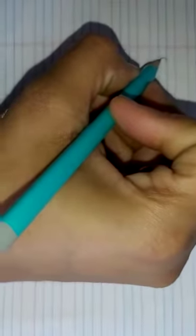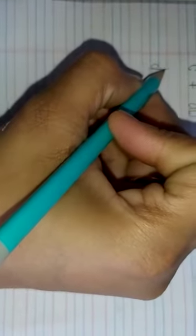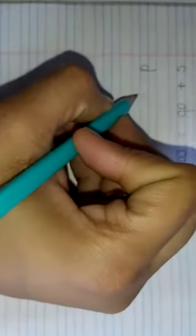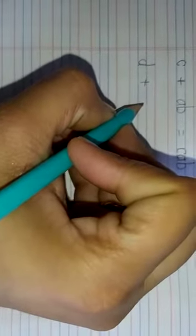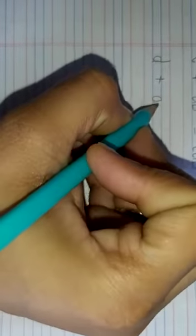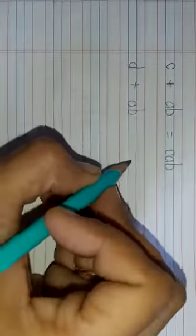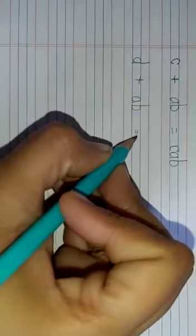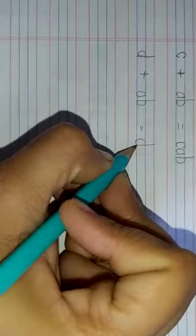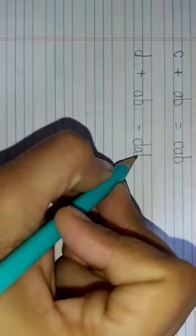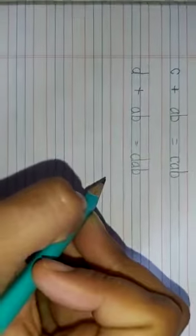Now next, D plus AB. This is dab. So we are going to write down dab, DAB. Right?